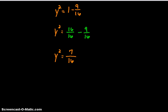So basically, if you multiply the one by 16 over 16, you get 16 sixteenths minus 9 sixteenths. You can subtract right across the top, and 16 minus 9 leaves you with 7. So you get y squared equals 7 sixteenths.